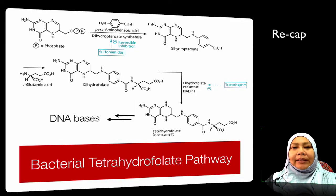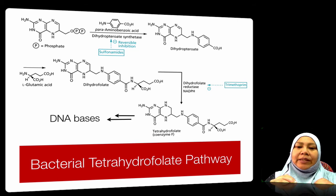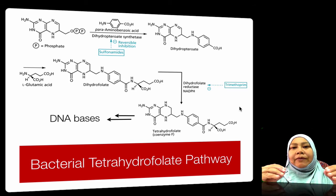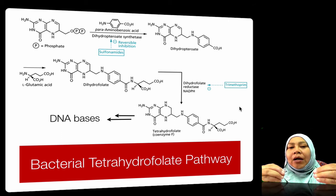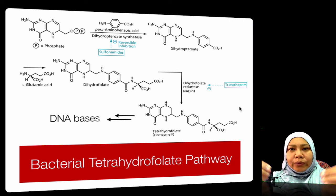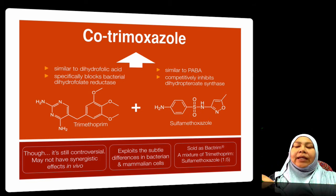Let's recap the bacterial tetrahydrofolate pathway. Sulfonamide acts on the DHS step, competing with PABA. The second part of inhibition is acted by trimethoprim on dihydrofolate reductase. If you have two drugs acting together on the same biosynthesis pathway, it makes the treatment more effective. Eventually, the bacteria would not be able to produce DNA and will slowly die.